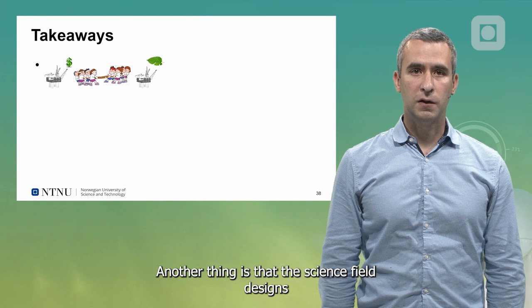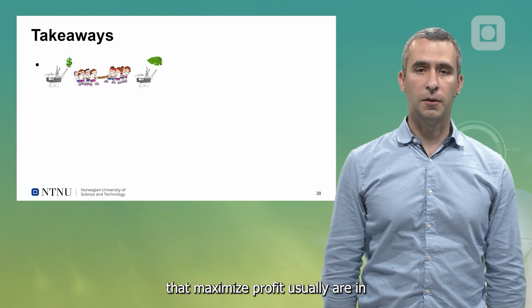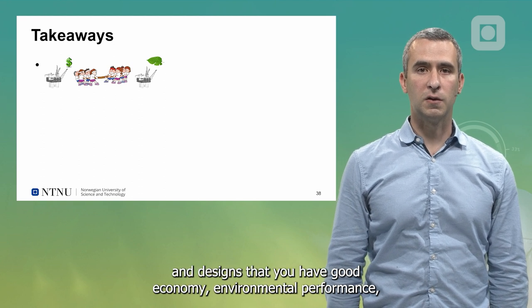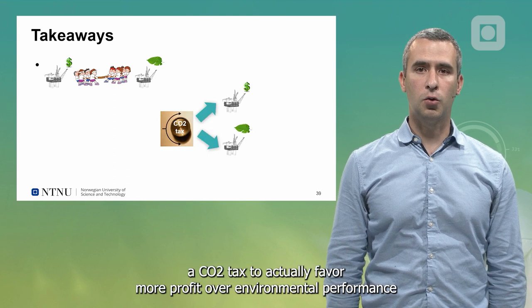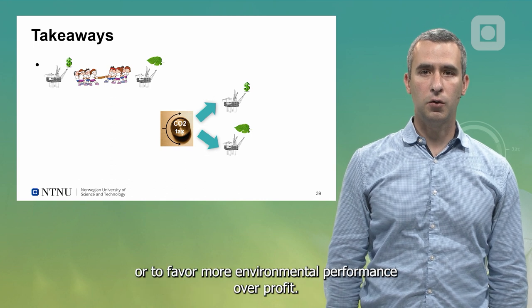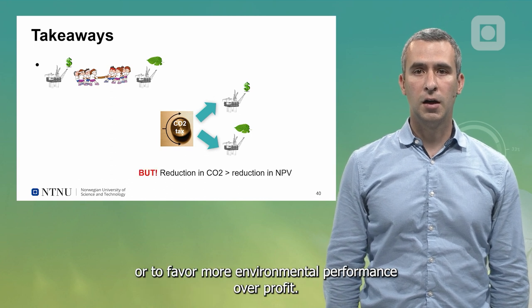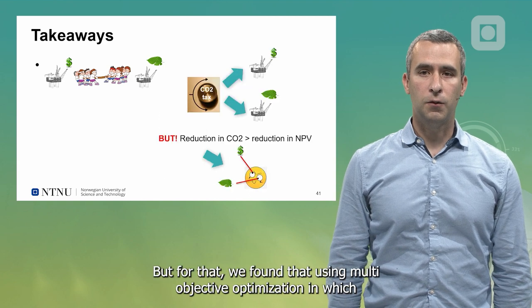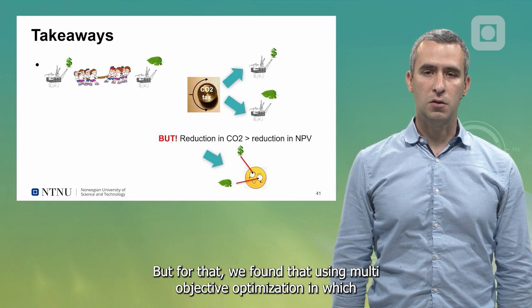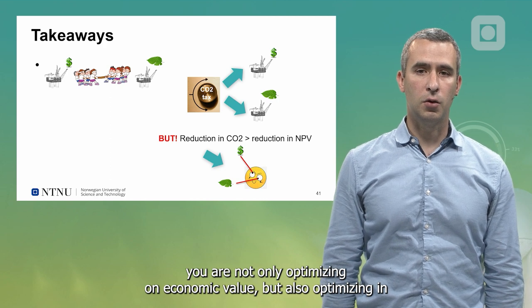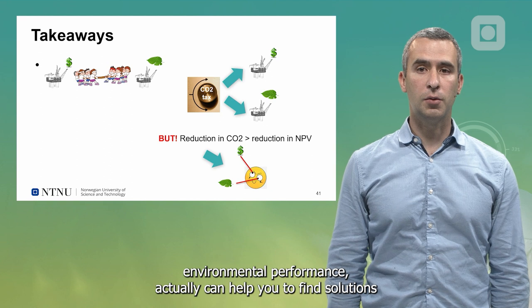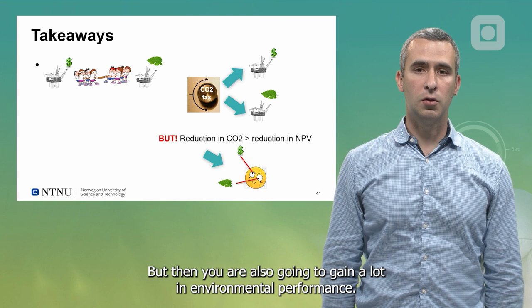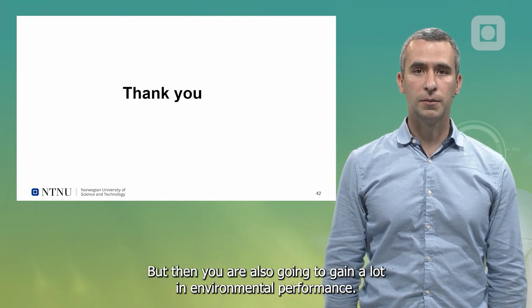Another thing is that field designs that maximize profit usually have a trade-off between those designs and designs that have good environmental performance. You can use the CO2 tax to favor more profit over environmental performance or to favor more environmental performance over profit. But usually, if you want to reduce CO2, you also have to sacrifice some NPV. For that, we found that using multi-objective optimization in which you are not only optimizing on economic value but also optimizing environmental performance can help you find solutions where you sacrifice a bit of project value but gain a lot in environmental performance.